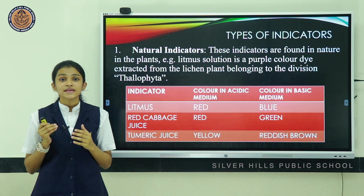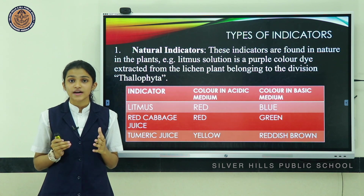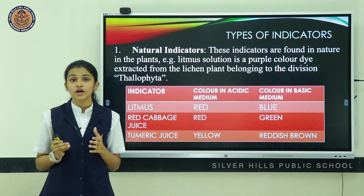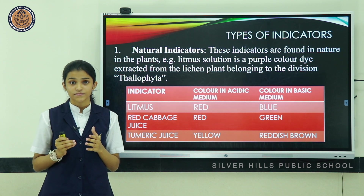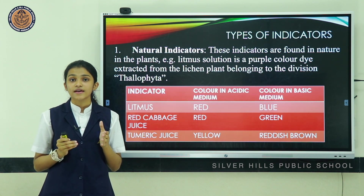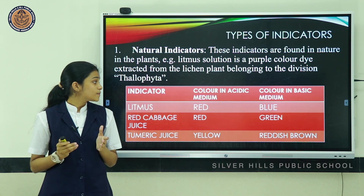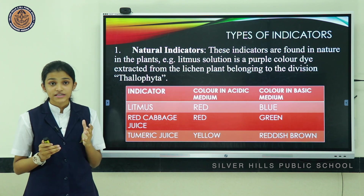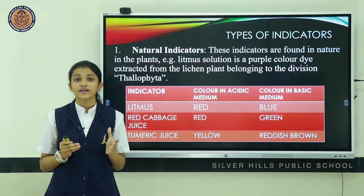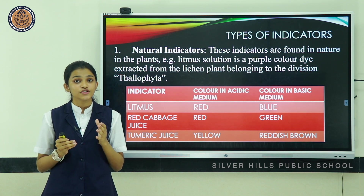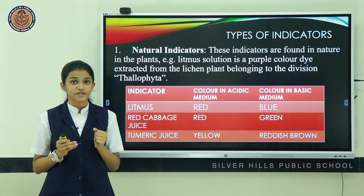Litmus shows red color in acidic medium and blue color in alkaline medium. Red cabbage juice shows red color in acidic medium and green color in basic medium. Turmeric juice shows yellow color in acidic medium and reddish brown color in alkaline medium.